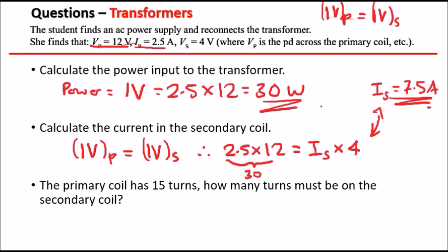Now the final one is the primary coil. And so the primary coil has 15 turns. So let's let the primary, the number of turns be represented by the letter N. So we can say NP is 15. How many turns must be on the secondary coil?